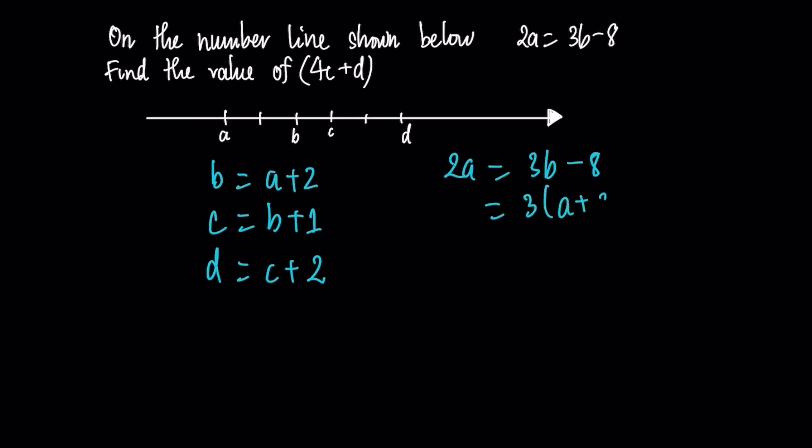Now I open the bracket. Then I have 3a plus 6 minus 8. So finally I will have 2a equal to 3a minus 2. By doing some basic algebra skill, now we have a very simple algebra equation. We get negative a equal to negative 2, so a equal to 2.